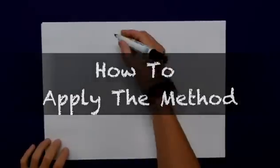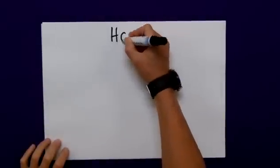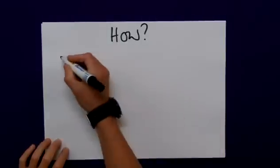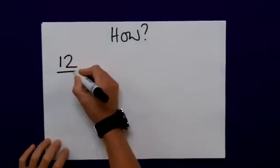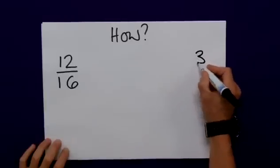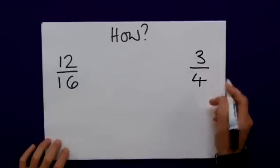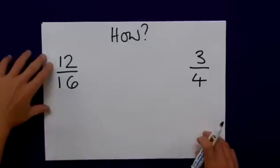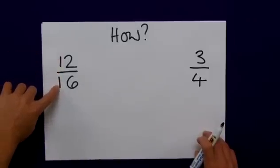We know why we use equivalent fractions, and the next question is how do we actually do this? Well, if we take the example from before of 12 sixteenths, I know the equivalent fraction to that was actually three quarters, but how do I get there? The simple answer is I need to find a number which will go into both the numerator and the denominator. It's worth actually starting with the numerator itself. Will that go into itself? Yes, of course it will.